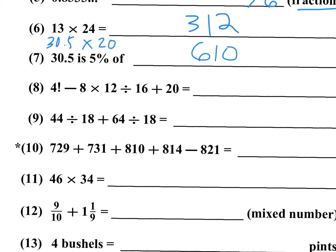4 factorial is 4 times 3 times 2 times 1, which is 24 — you should memorize that or you can work it out. Then we have 8 times 12 divided by 16. 8 divided by 16 is one half; one half of 12 is 6, so I have minus 6. 24 minus 6 is 18, and then 18 plus 20 is 38.